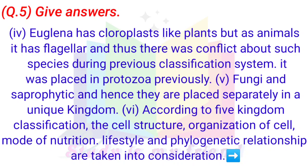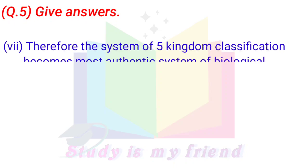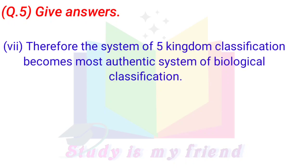Euglena was placed in Protozoa previously. 5. Fungi are saprophytic and hence they are placed separately in a unique kingdom. 6. According to five kingdom classification, the cell structure, organization of cells, mode of nutrition, lifestyle, and phylogenetic relationship are taken into consideration. 7. Therefore, the system of five kingdom classification becomes the most authentic system of biological classification.